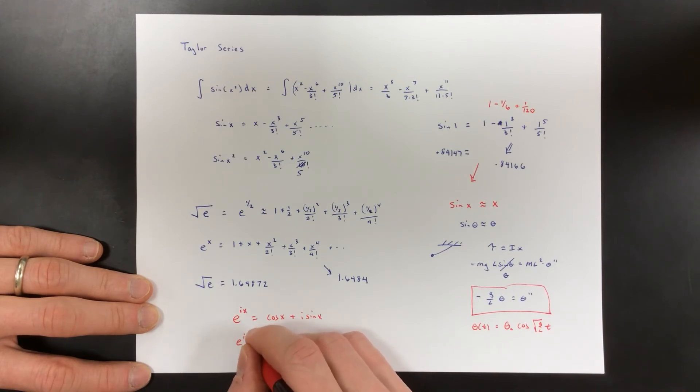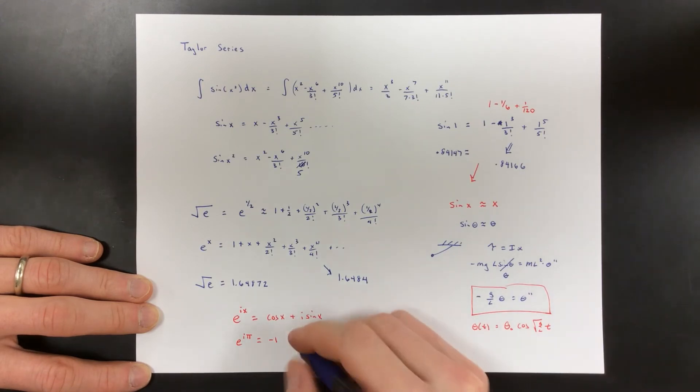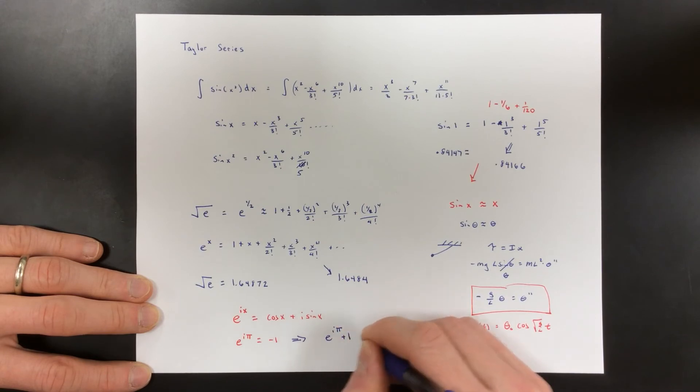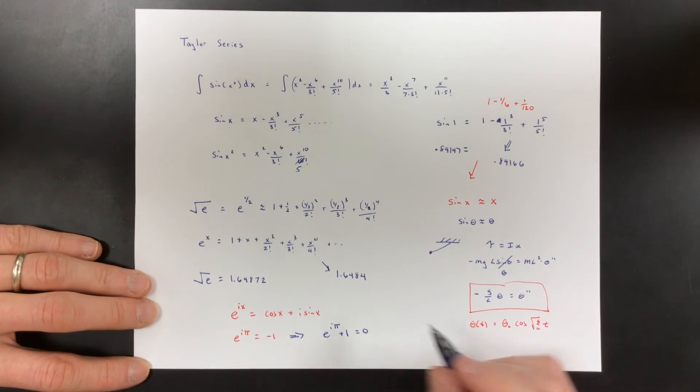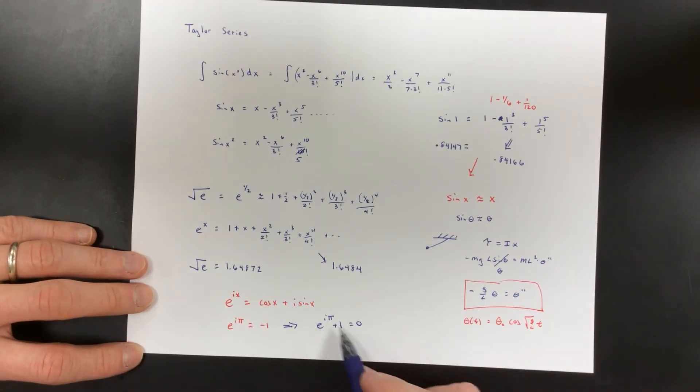And usually Euler's identity is written as e to the i pi plus one equals zero, and it includes almost all the fundamental numbers in math: e, i, pi, one, and zero.